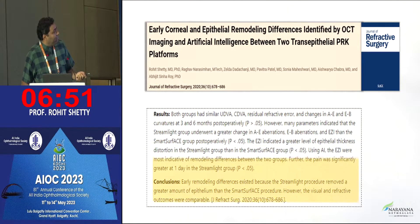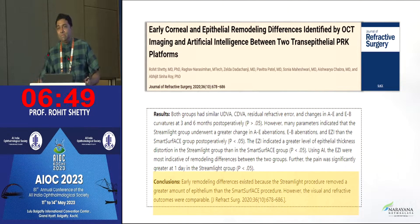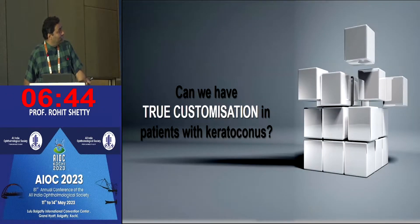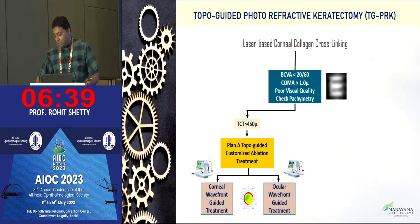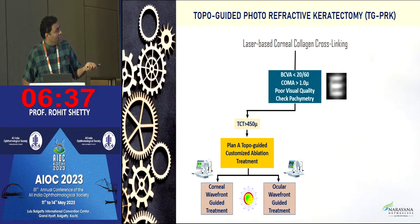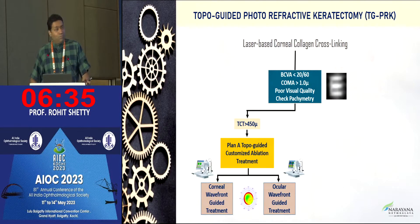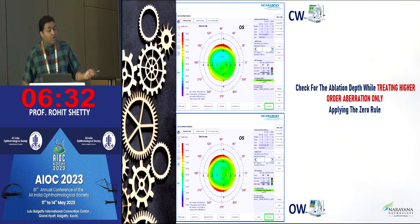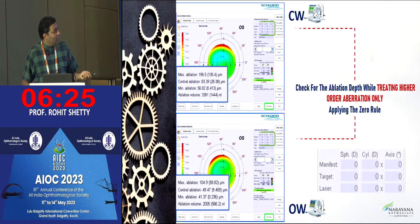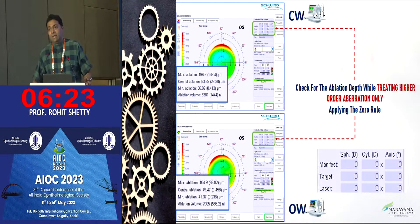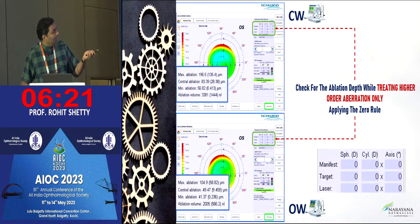In this case, it's saying treat only the trefoil and some aberrations. What you actually achieve is much lesser depth of ablation — you're saving tissue. We have seen that epithelial remodeling becomes much better and easier when you use more customized approaches. The true customization has a huge role in keratoconus itself. You can look at the topo-guided treatment, and what is interesting is you have something called ocular wavefront guided treatment, which uses a pyramidal aberrometer and looks at the total wavefront of your eye.